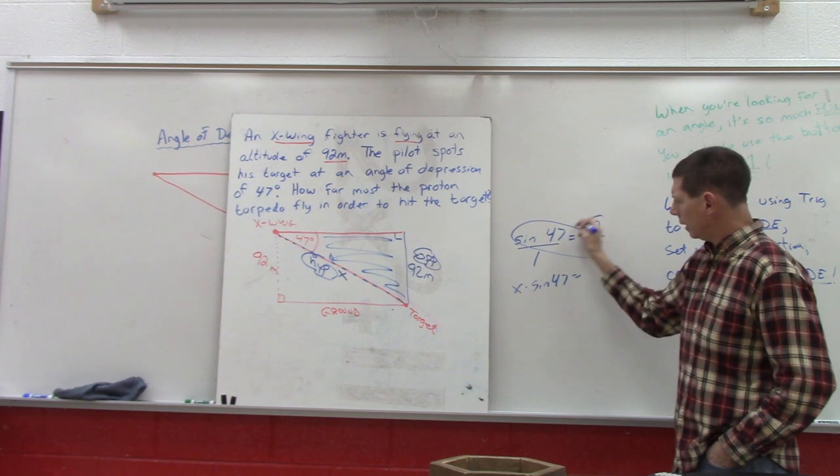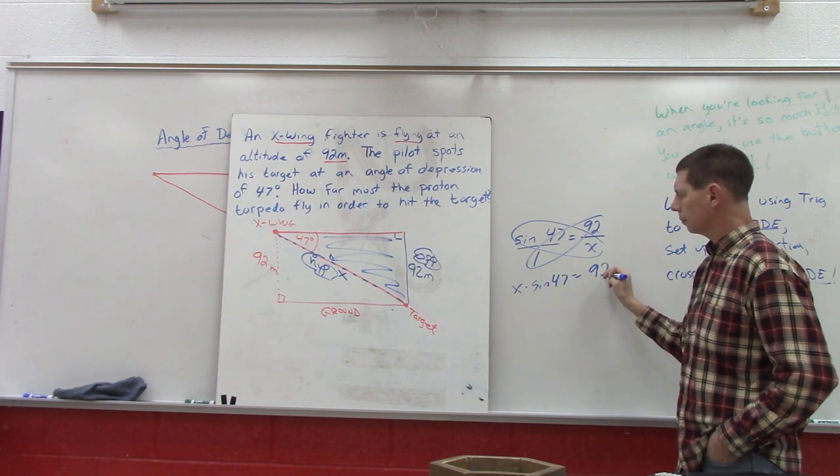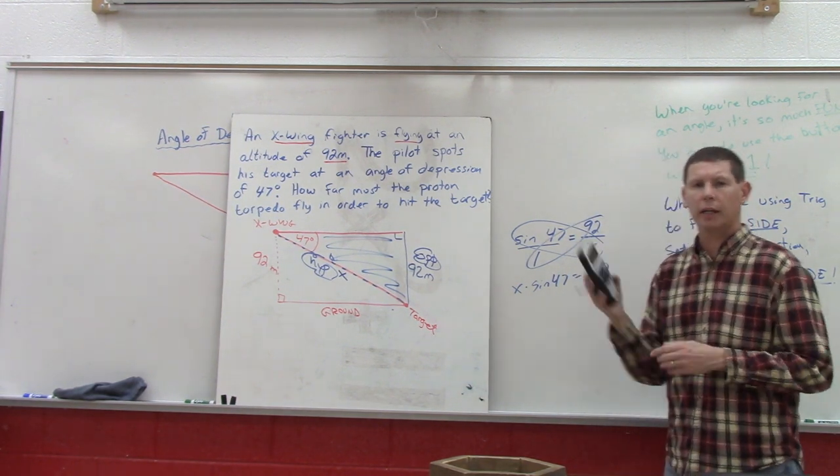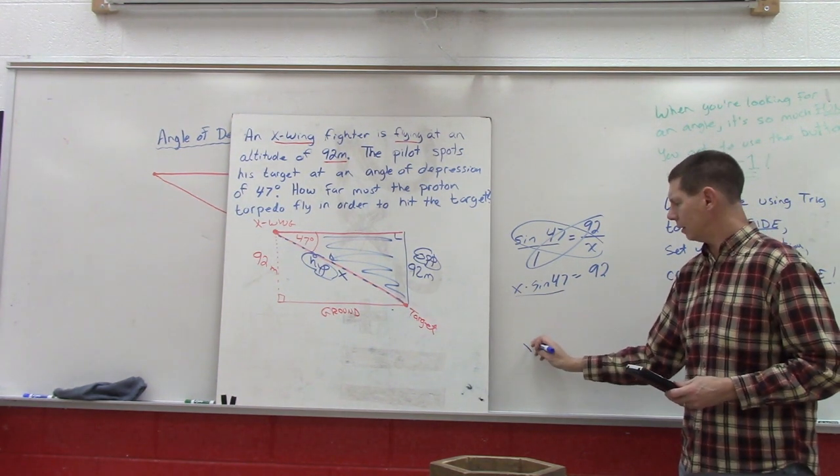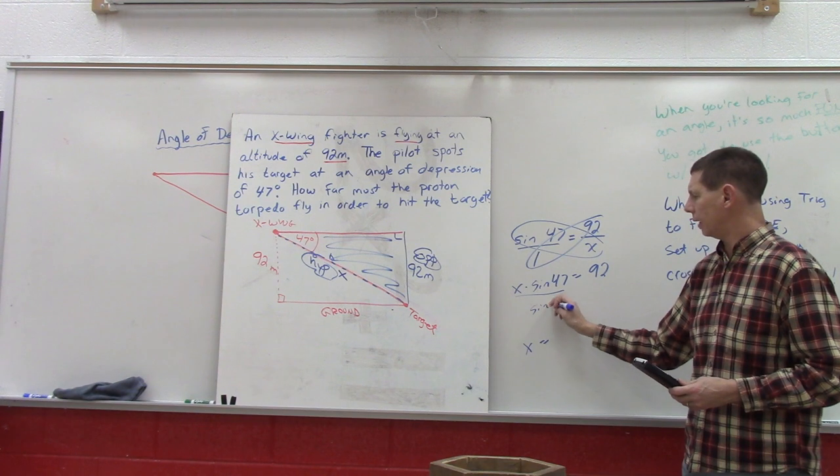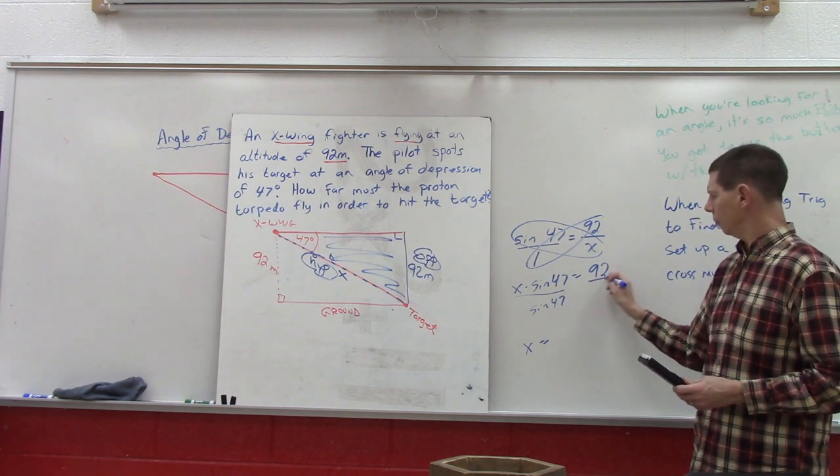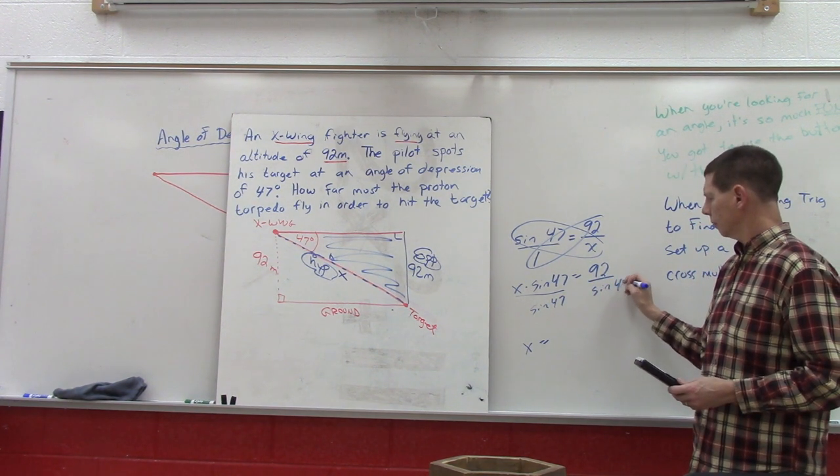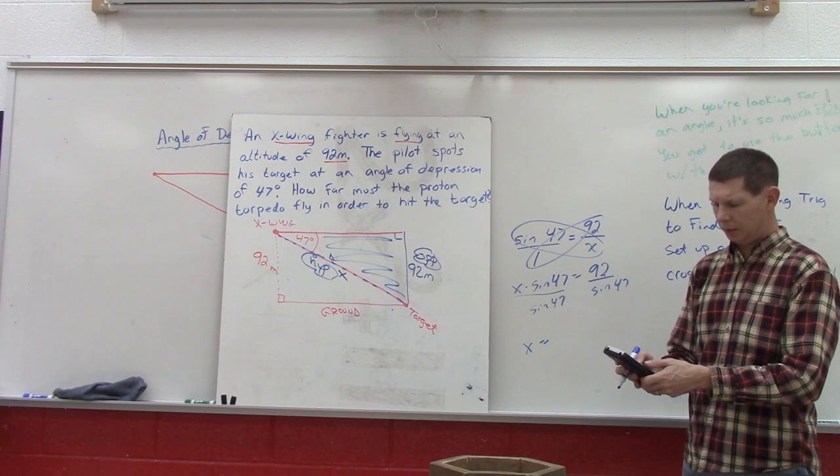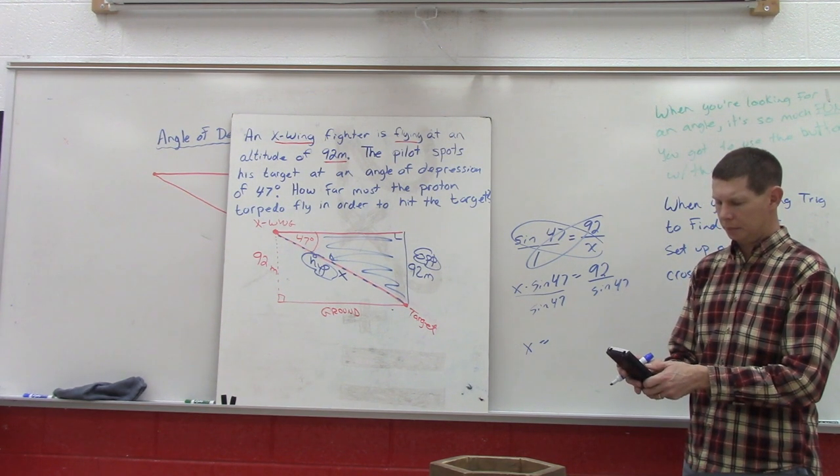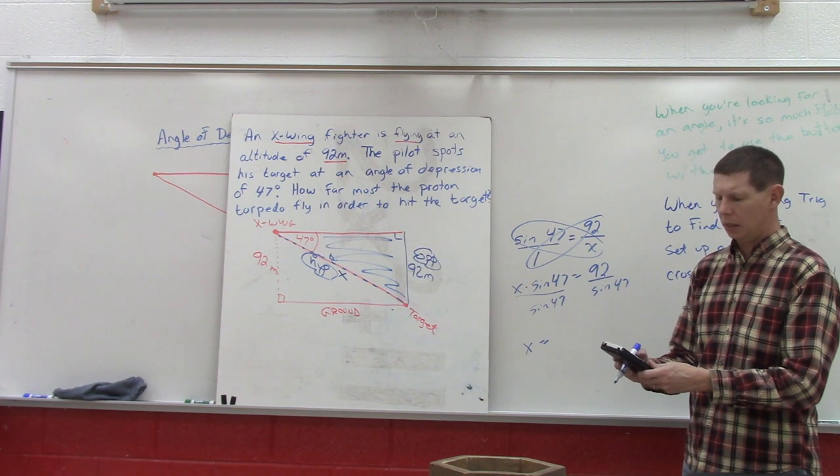And then we're going to take our calculator. On the last step to get X by itself, we have to divide 92 by the sine of 47. So 92 divided by the sine of 47, we should get about 125.8 meters.